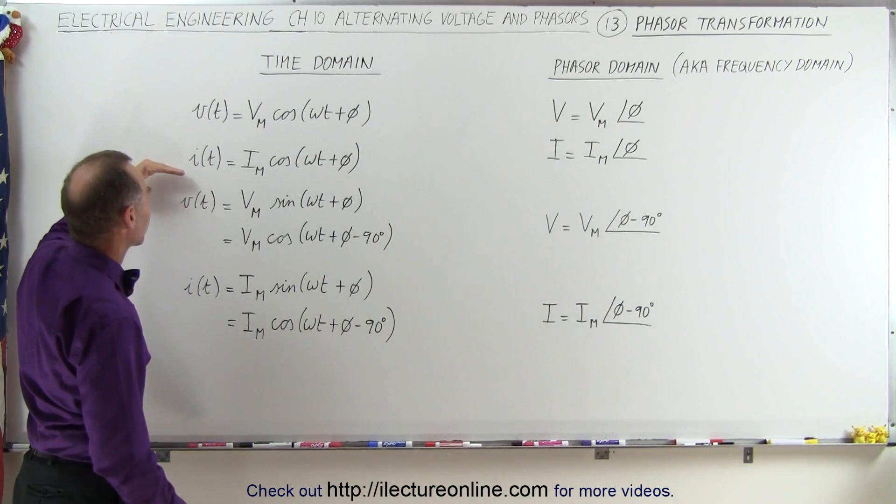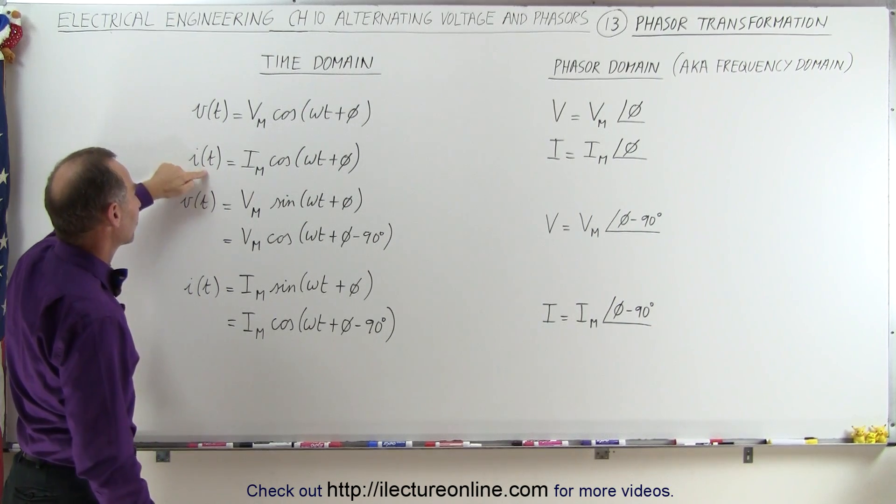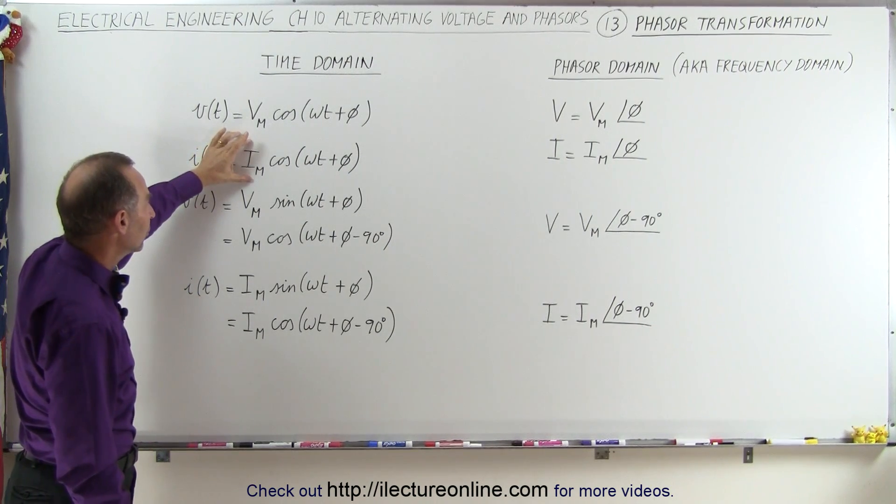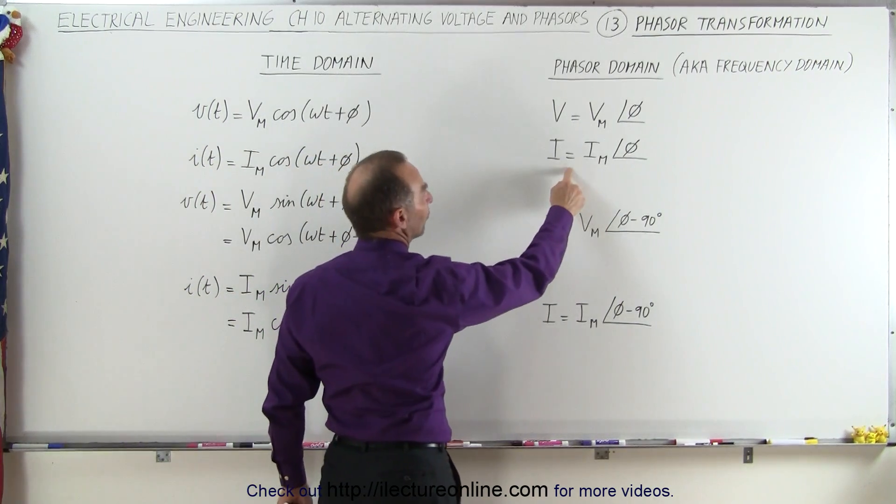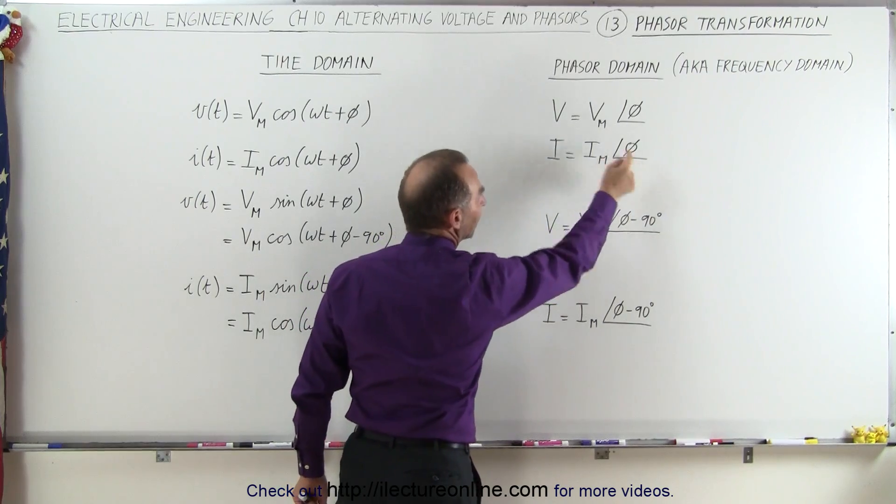Same for the current. If we express the current in the circuit as a function of time which is equal to the maximum current times the cosine of omega t plus phi, again we have the vector quantity, the phasor, which is equal to the magnitude times the phase angle.